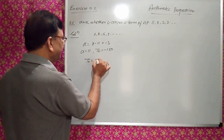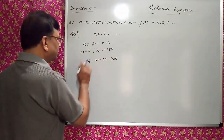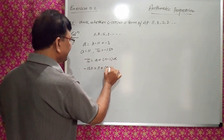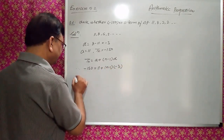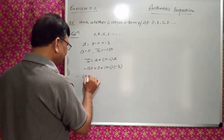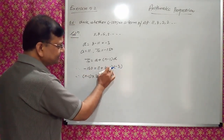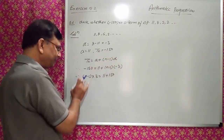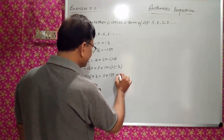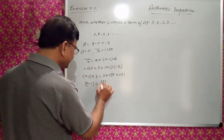Using TN = A + (N-1)D: -150 = 11 + (N-1)×(-3). Taking the whole quantity to the other side: (N-1)×3 = 11 + 150 = 161. Therefore N - 1 = 161/3.